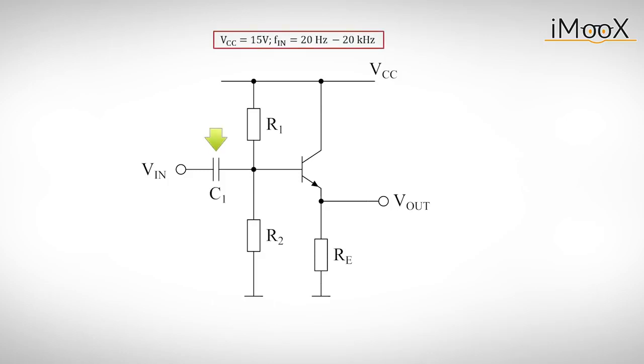Secondly, we add a capacitor at the input as a high-pass filter to make sure that only AC signals with more than 20 Hz are amplified. Now we choose the output voltage for the largest possible symmetrical swing, which is half of the supply voltage, or 7.5 volts.